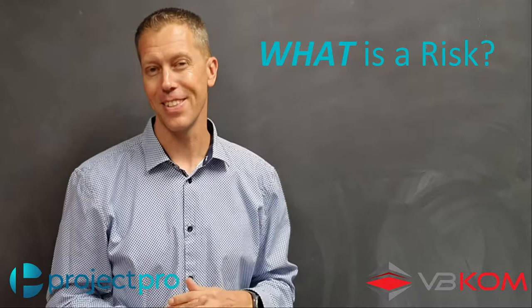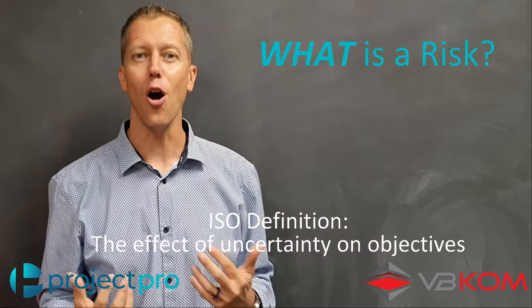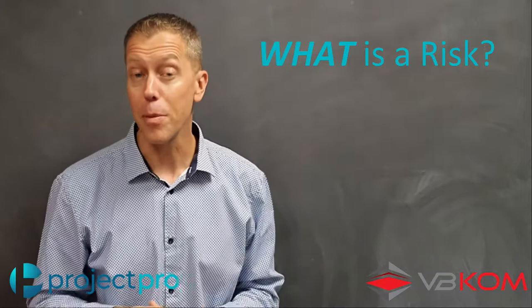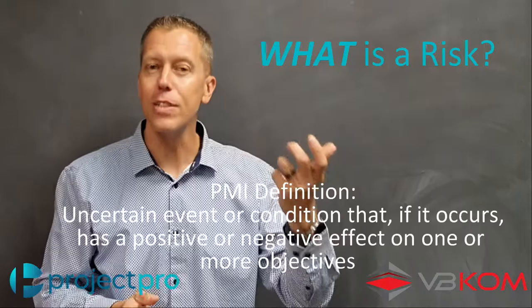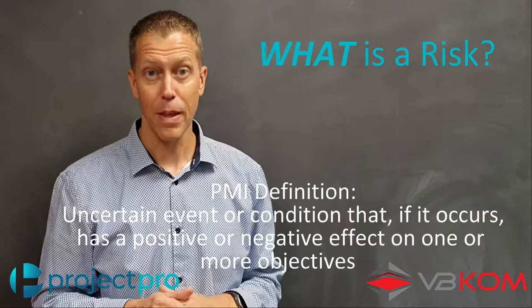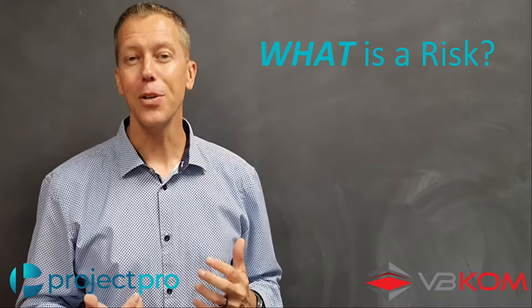So let's start off with what is risk and risk management. The definition of a risk is the effect of uncertainty on objectives. As per the PMI — the Project Management Institute — they define risk as an uncertain event or condition that, if it occurs, will either have a positive or a negative effect on one or more of your objectives. Positive risks we call opportunities, and negative risks we call threats.